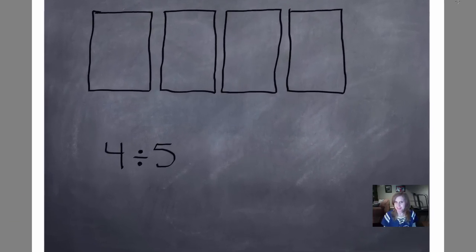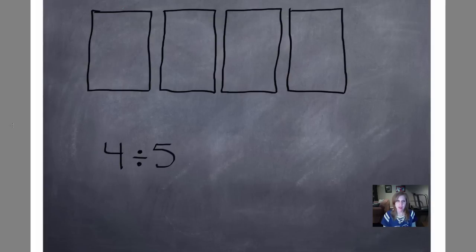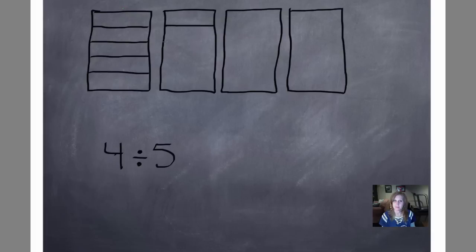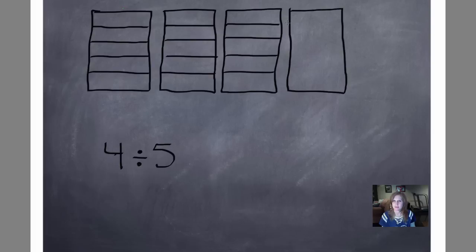Since you all divided your candy bars in class, let's see if you did it the way I do it. Here are our four candy bars, and I wrote the problem: four candy bars divided by five people. We're going to divide our candy bars to make sure each person gets an equal amount. I'm going to divide each of these candy bars into five parts. My candy bars kind of look like someone's been nibbling on them already — but it certainly wasn't me.